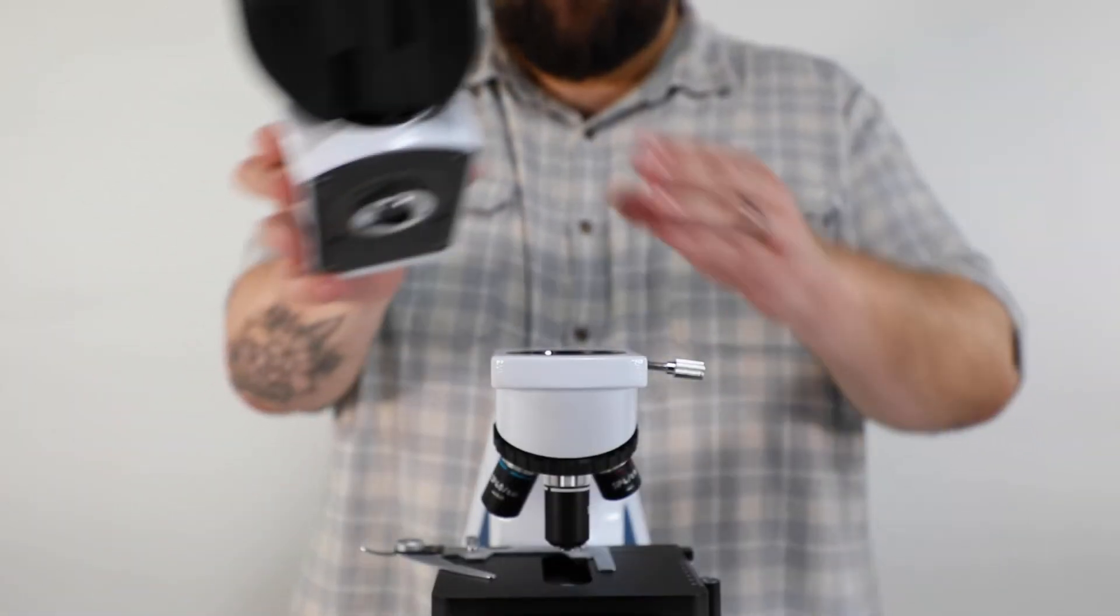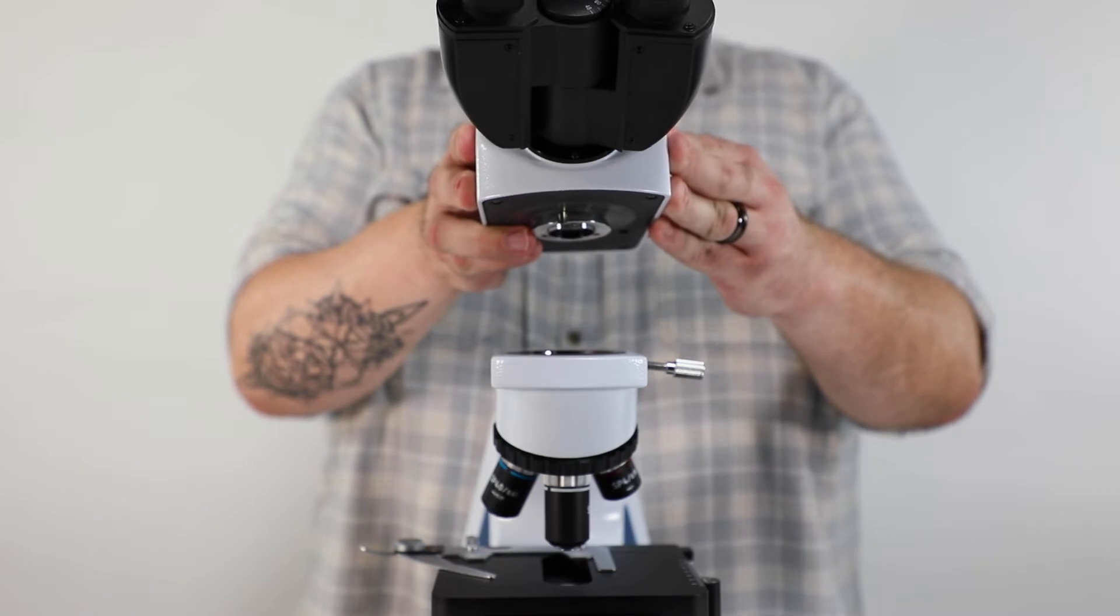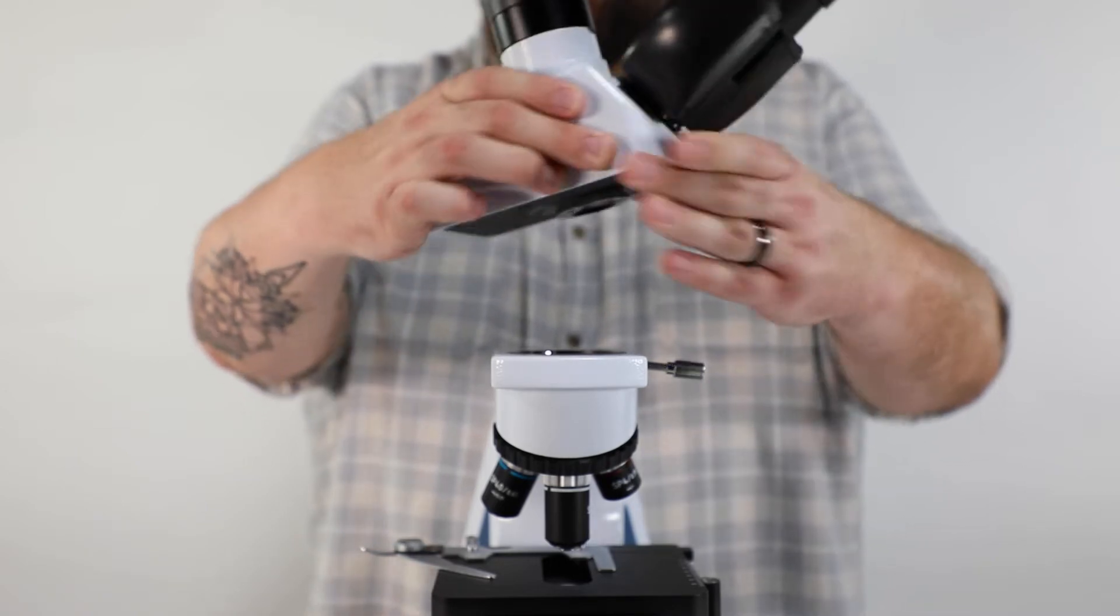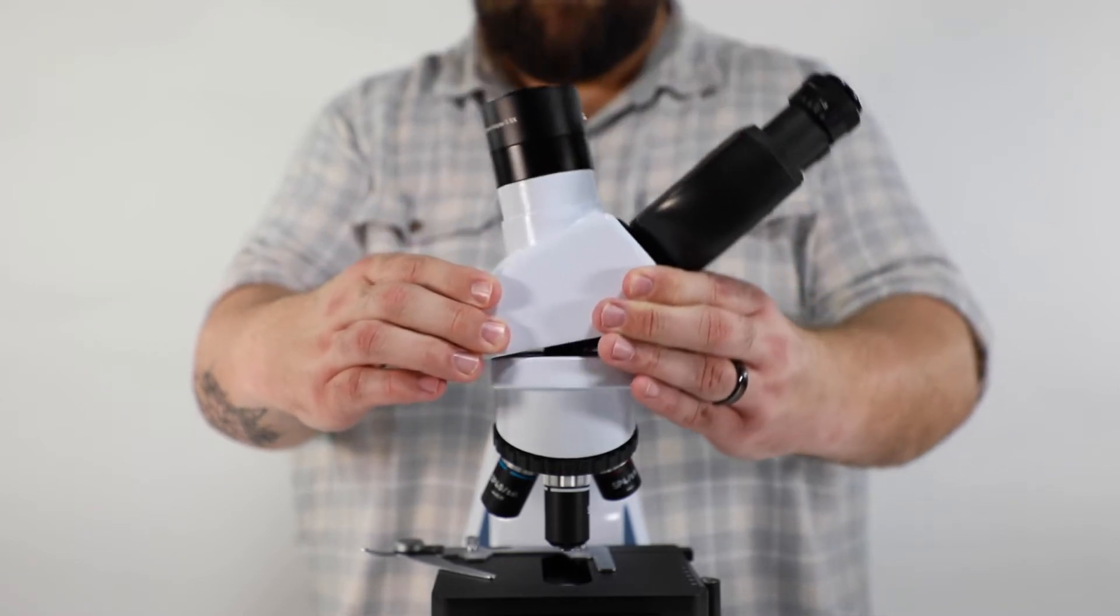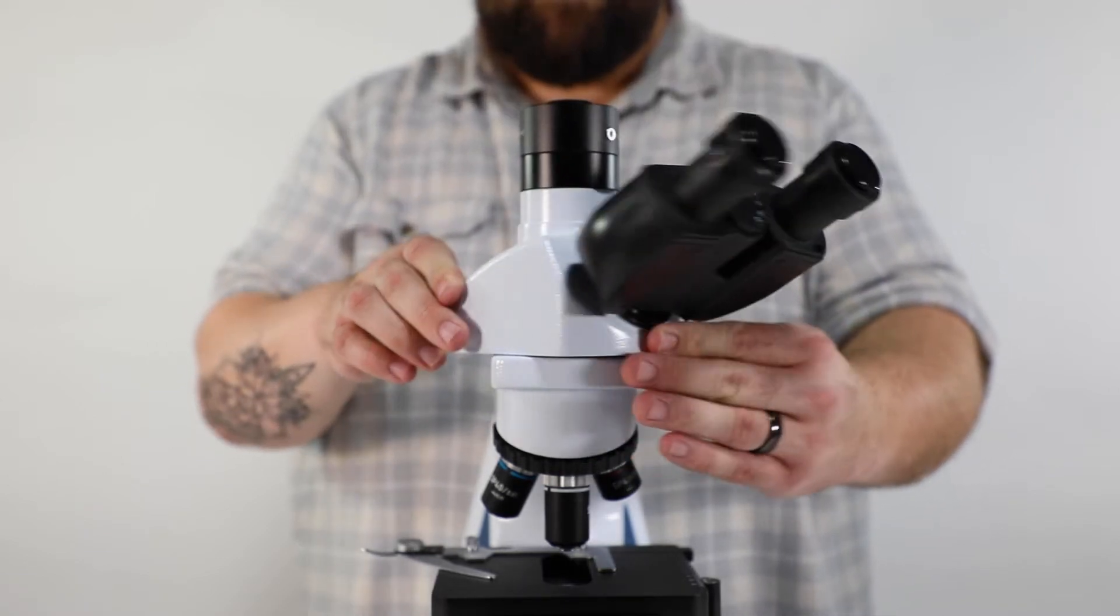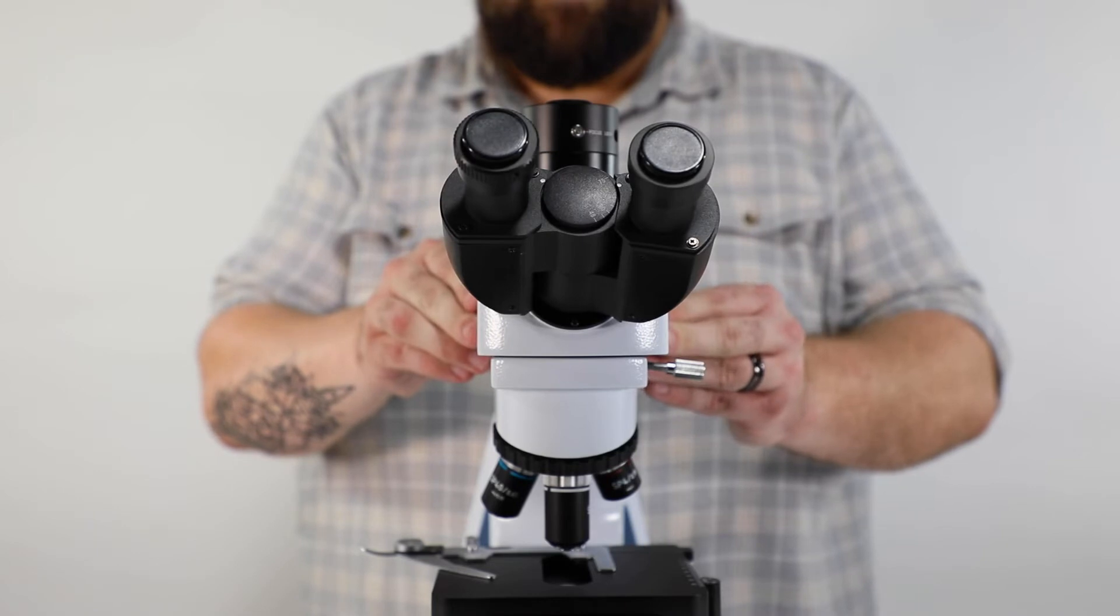Hold the microscope head over the body of the microscope with the eyepiece slots facing you. Then turn the microscope head about 90 degrees to the right and slightly tilt the head back so that the eyepiece slots are angled up. Lower the head into the port, making sure that the notch in the port is flush with the space on the bottom of the head.